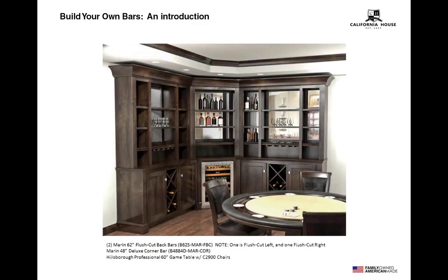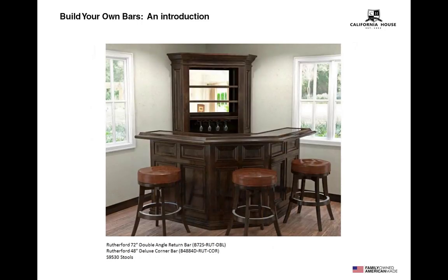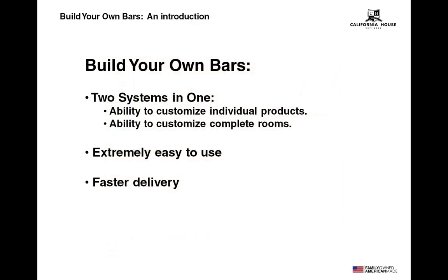Next is two flush cut back bars with a corner bar in the center — great for smaller rooms where your customer wants a beverage center but cannot fit the bar along with a pool or game table. We offer a build sheet for the back bars as well to make ordering easy. Here's a different take on that setup with a front bar added. And here's another extremely popular corner setup: a Rutherford double angle return bar with a deluxe corner bar. The California House Build Your Own Bar System will be a tremendous asset to your showroom floor, giving you the ability to create custom bars and rooms for a fraction of the cost of a custom builder.